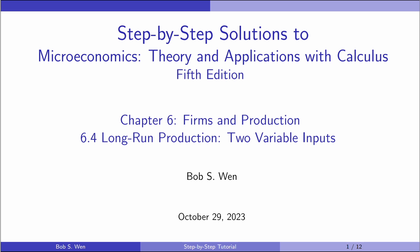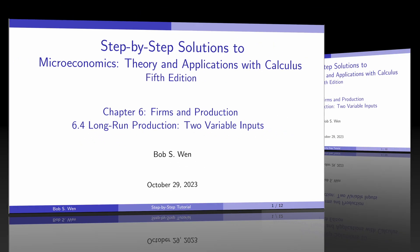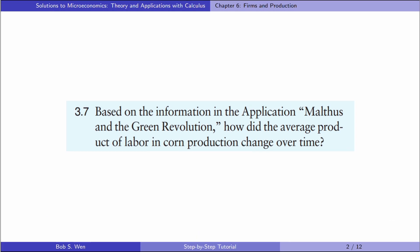Before we start the exercises for the long-run production, we finish the last question for the short-run production we haven't solved in the last video. Here is exercise 3.7. Based on the information in the application, Malthus and the Green Revolution: how did the average production of labour in corn production change over time?